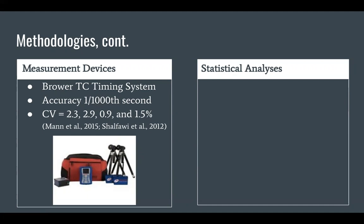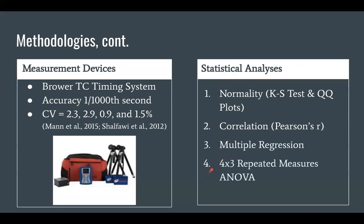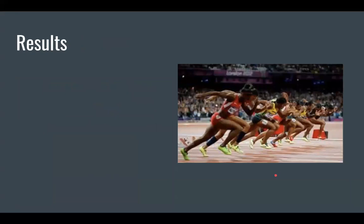Once I collected all the data, we had no missing data. All athletes completed all sessions. We got to start our statistical analysis. We started with a normality test. We used the KS test and QQ plots to determine normality. We then used the Pearson's correlation, the findings of which actually dictated the need to run a multiple regression to assess the need to use covariates in our ANOVA analysis.